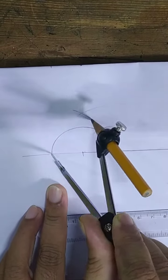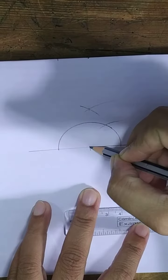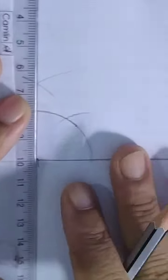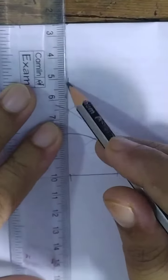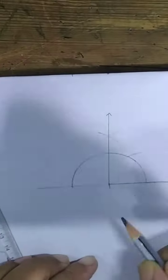Wherever your arcs intersect, that point of intersection and this starting point, that will be your vertex. Just draw the straight line. When you draw the straight line, this is the angle of 90 degrees.